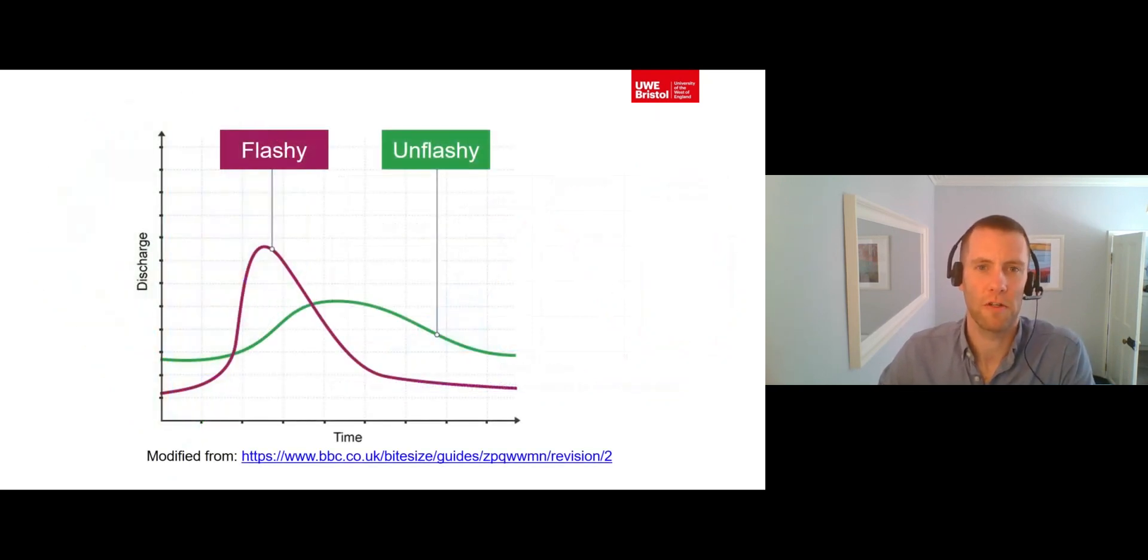Whilst all storm hydrographs follow the sequence that we've just gone through, their shapes can differ considerably because of differences in the relative sizes of their storm flow and base flow. Hydrographs with short lag times, steep rising limbs and high peak discharges have high levels of storm flow and low levels of base flow and are known as flashy or responsive catchments.